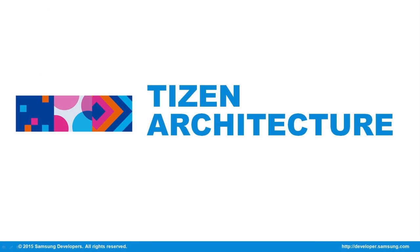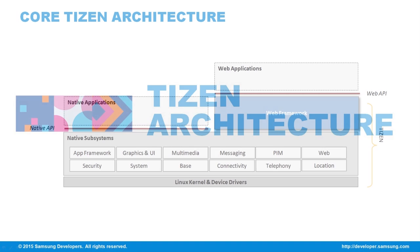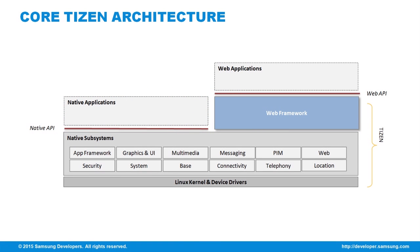Let's take a look at the architecture of Tizen. Presented here is the core Tizen architecture. It consists of the Linux kernel and the core web API. It has components that include the application framework, graphics and UI, multimedia, web, messaging, and many more. Lastly, the application layer containing the actual developed application to run on Tizen.